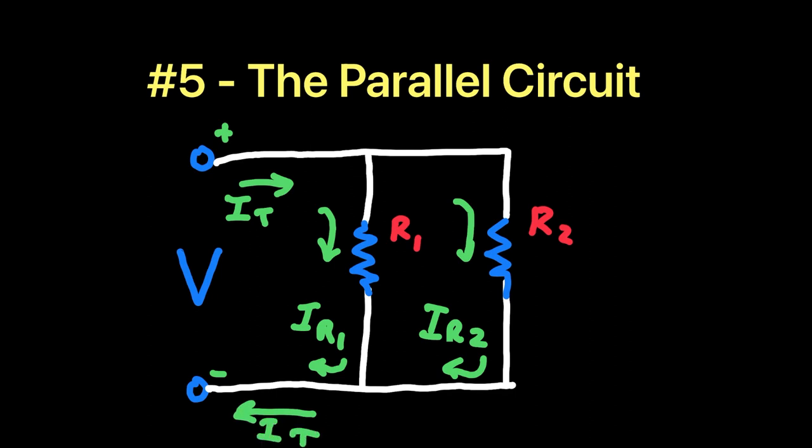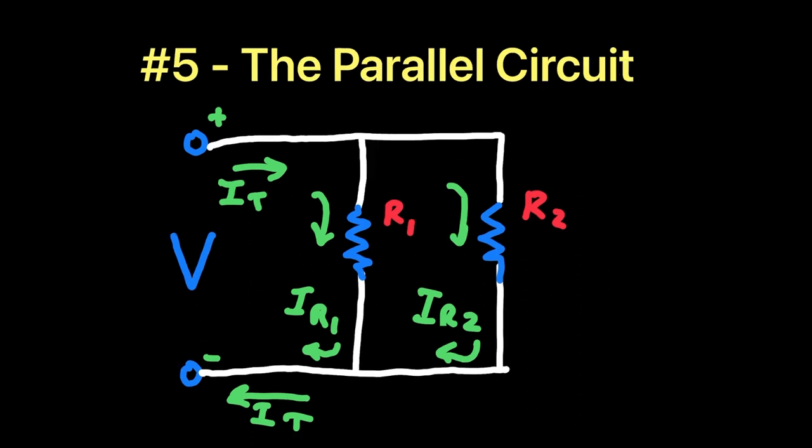The total circuit current divides among the loads and rejoins back here to return to the source. This current divides in a way that depends on the resistance value of the loads. And because you know that the voltage across each load is equal to the voltage source, the current for each load can be found by Ohm's law.